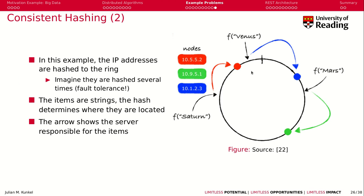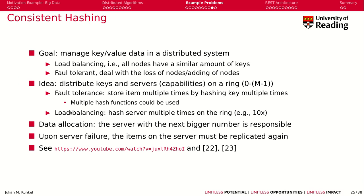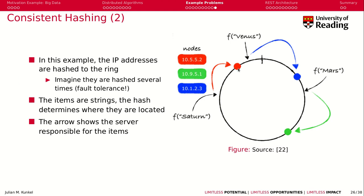Another issue is load balancing. If the blue server has a small range and the green server has a small range but the red server has about twice as much data, the load is uneven. To fix this, we hash a server multiple times — for example three times — on the ring. This removes items to much smaller ranges and distributes the load more evenly.